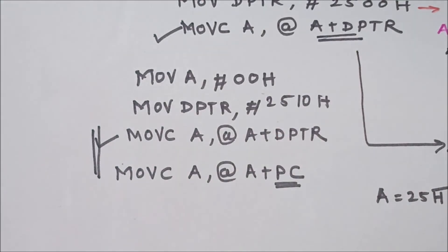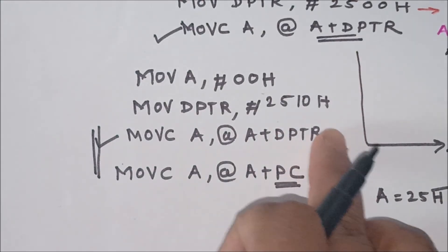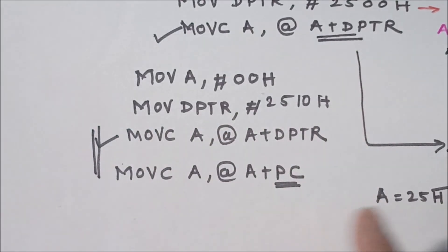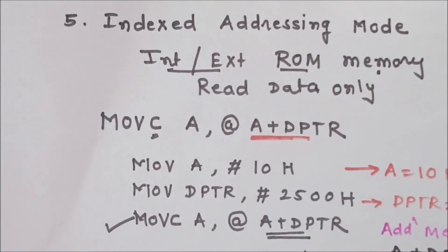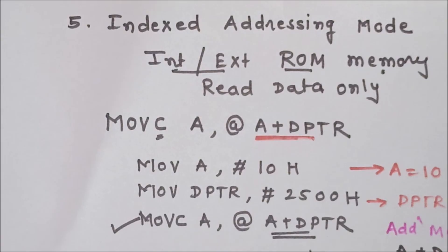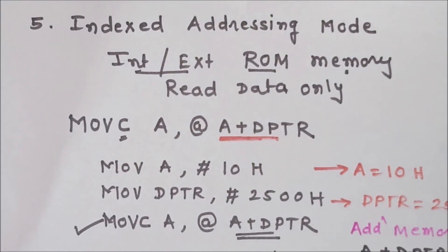These instructions are used to read data from ROM memory, whether internal or external. These are all the addressing modes used for the 8051 microcontroller. In the next lecture, we will see how to write programs using these instructions.